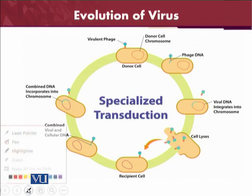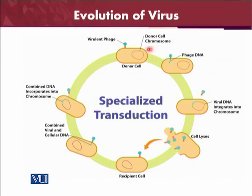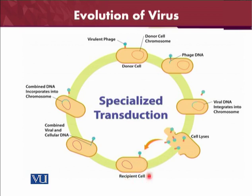To understand what transduction is, we can look at this diagram. This is the virulent phage entering the donor cell. The viral DNA integrates into the chromosome — the normal way of replication — because the viral genes use the host machinery. Then the cell lyses and a large number of bacteriophages are produced. These bacteriophages go to infect another host cell, combining viral and cellular DNA with the chromosome, and the process repeats.